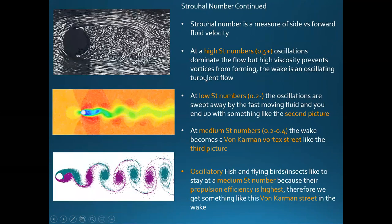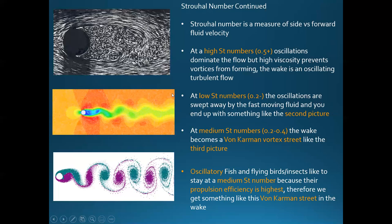At high Strouhal numbers, oscillations dominate the flow — high side velocity but not much forward velocity, so vortices pile up and you get turbulent oscillatory flow. At low Strouhal numbers, below around 0.2, the flow is very fast-moving with not much side movement, so vortices try to form but get swept away by the fast-moving fluid.